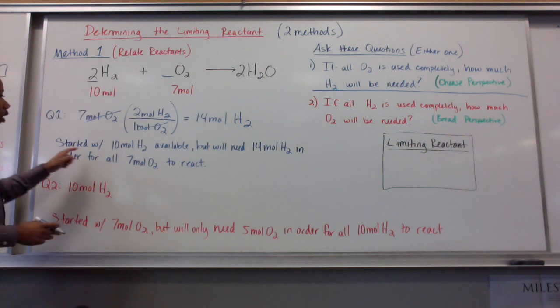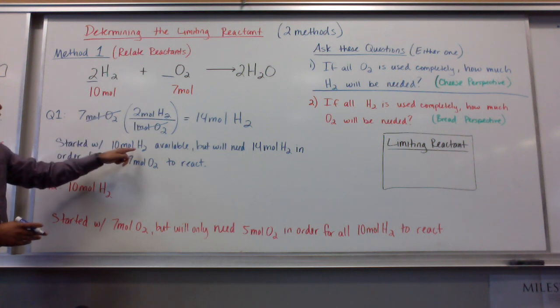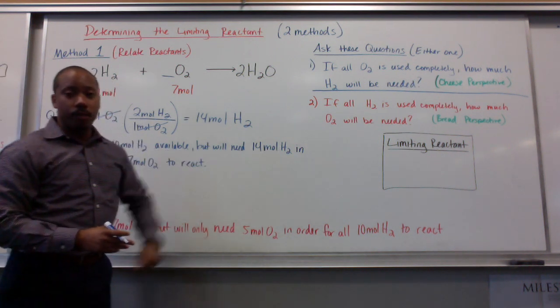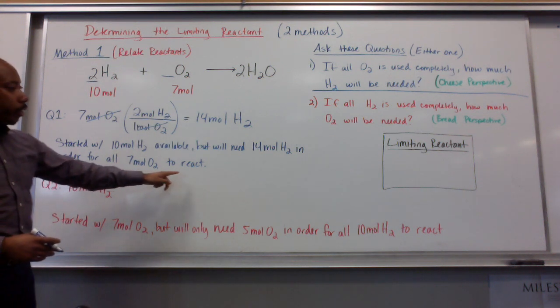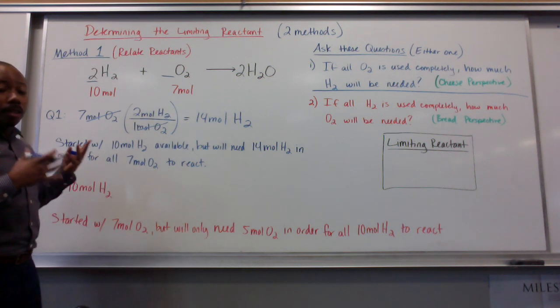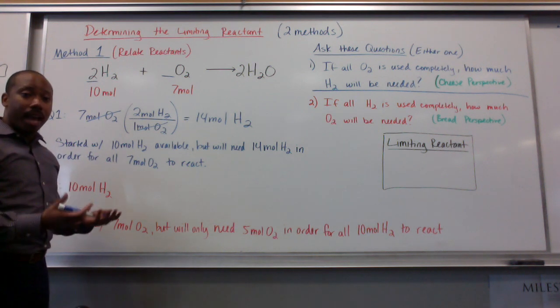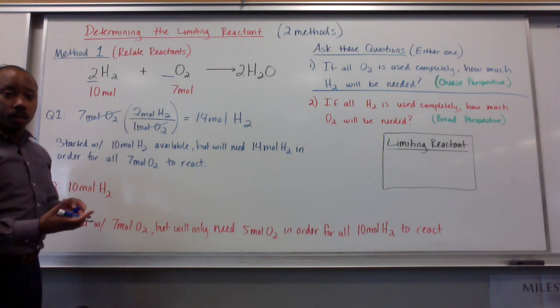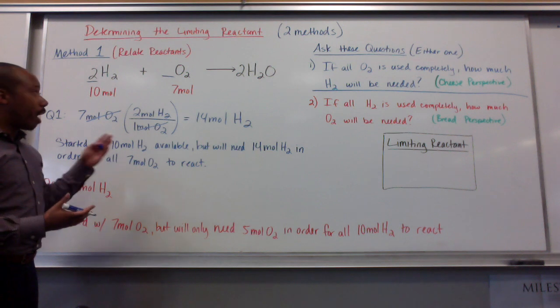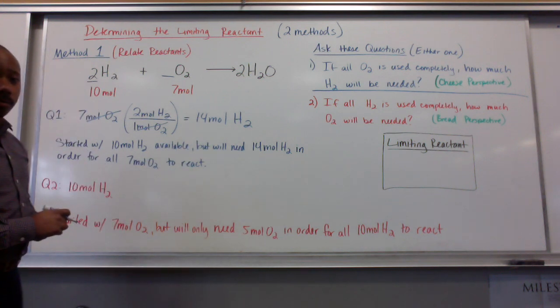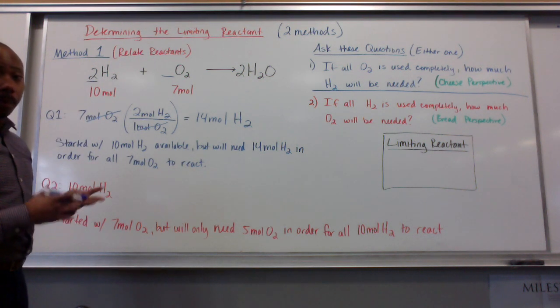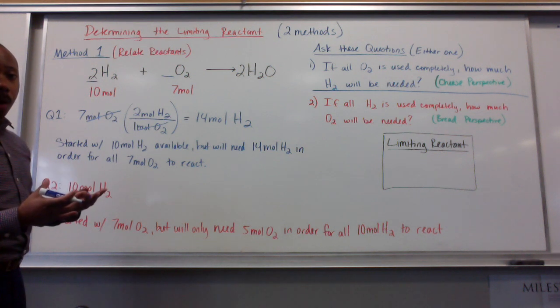So, since I started with 10 moles of H2 available, but will need 14 moles of H2 in order for all 7 moles of O2 to react, that means all 7 moles of O2 cannot react. I will have some left over, because I don't have enough H2 for it all to react. I only have 10 moles, but I really need 14 moles. So, that means H2 would be my limiting reactant. It's going to limit how much I can make.